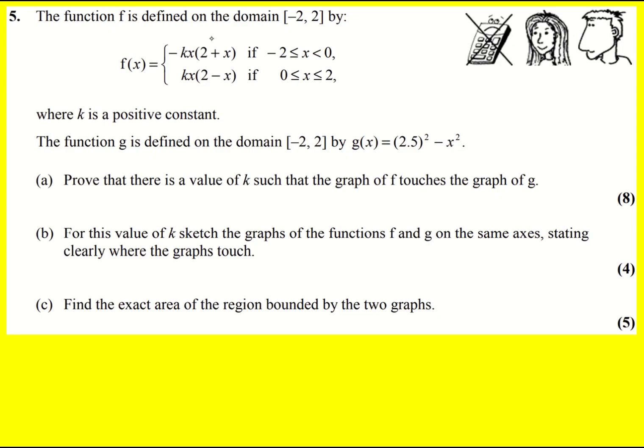We have a piecewise function f of x and a negative parabola g of x, and we're asked to prove that there's a value of k, where k is a positive constant, such that the graph of f touches the graph of g. Now does it touch this side or this side? That's one question to think about. Do we need to check both solutions?